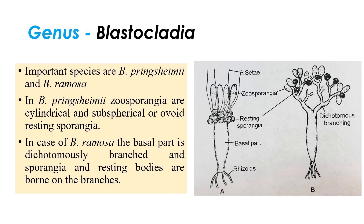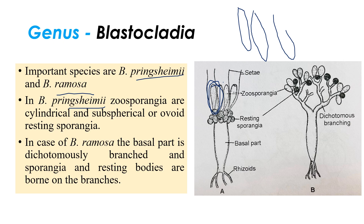The next genus is Blastocladia, with important species like Blastocladia pringsheimii and Blastocladia ramosa. In Blastocladia pringsheimii, the zoosporangia are cylindrical or sometimes ovoid in shape. In Blastocladia ramosa, the sporangia are dichotomously branched — they are produced on dichotomously branched structures. So Blastocladia pringsheimii has cylindrical zoosporangia while Blastocladia ramosa has dichotomously branched sporangia.